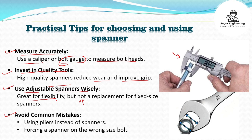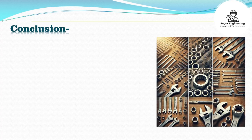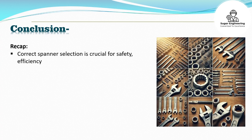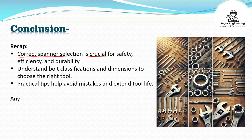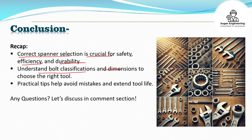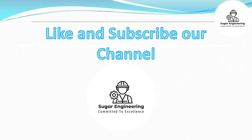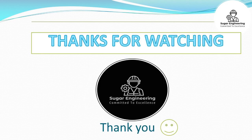We should also avoid common mistakes, such as using pliers instead of spanners, or forcing a spanner onto the wrong bolt size. In conclusion: correct spanner selection is crucial for safety, efficiency, and durability. Understand bolt classification and dimensions to choose the right tool, and follow practical tips to avoid mistakes and extend tool life. If you have any questions, let's discuss in the comment section. Like and subscribe to our channel for more videos. Thanks for watching.